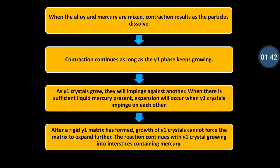As the gamma 1 phase keeps growing, these crystals tend to impinge on each other in the presence of mercury, leading to expansion. Once a solid rigid gamma 1 matrix has formed, the growth of gamma 1 crystals cannot force the matrix to expand further. This growth eventually stops as there is insufficient mercury available for further crystal growth.